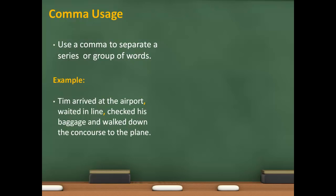These are a series of actions. In a list of items, putting a comma before the conjunction 'and' is optional.